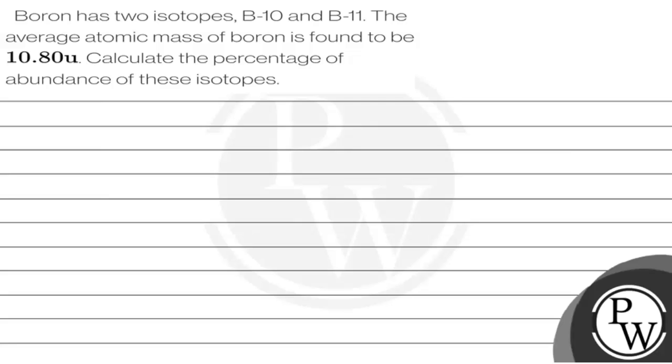Hello bachyo. Let's have a look at this question which says Boron has two isotopes, B-10 and B-11. The average atomic mass of Boron is found to be 10.80u. Calculate the percentage of abundance of these isotopes.